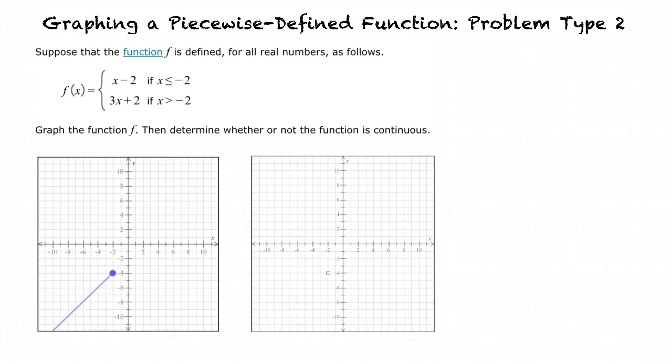When we substitute both these numbers into our equation, f of x equals 3x plus 2, we get 0 comma 2 and 2 comma 8 for our two plot points. Now that we have our two plot points, we can draw the line through the two points, making sure to keep it greater than negative 2, and start with an open circle since the piecewise function domain is not equal to negative 2.